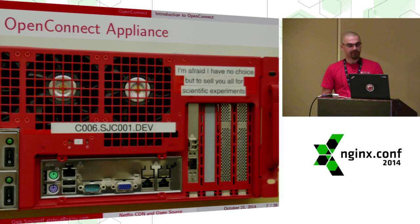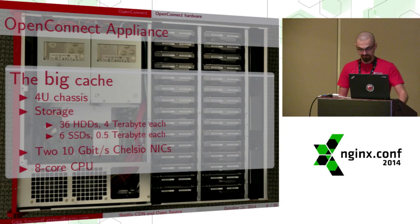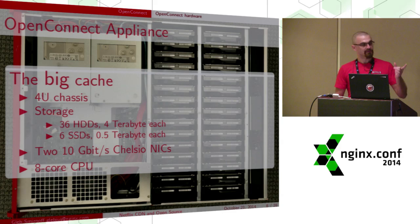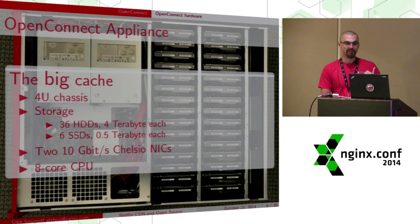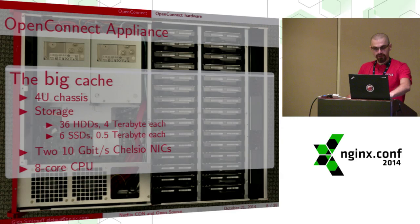Unfortunately we no longer paint them red because some ISPs said they prefer neutral gray and white colors in their racks, but we may revive that. Let's turn things upside down and look what's inside — there are a lot of disks. Right now we've got two versions of the Open Connect Appliance. The first is full of spinning disks, plus a few extra solid state drives for the most popular content. It carries 144 terabytes of data, meaning it can carry a large part of the entire Netflix collection.